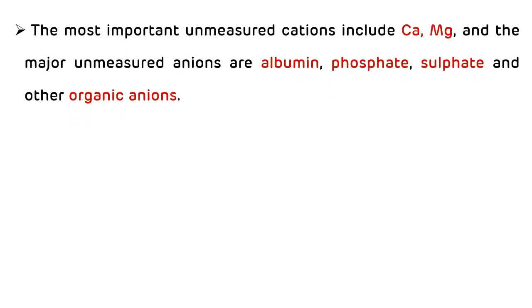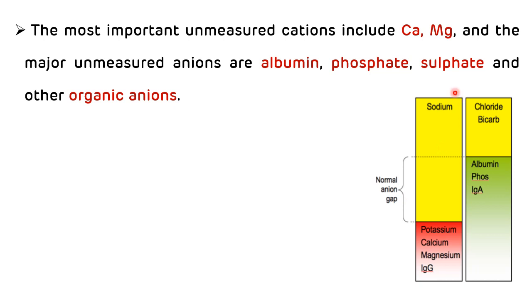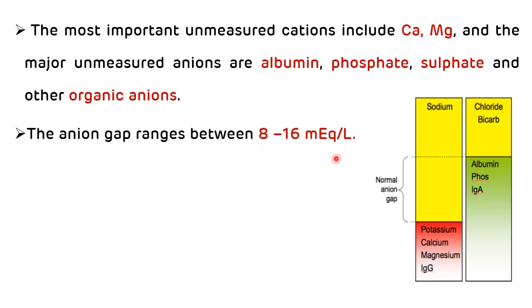The most important unmeasured cations include calcium and magnesium, and the major unmeasured anions are albumin, phosphate, sulfate, and other organic anions. This picture shows the normal anion gap. The unmeasured cations include sodium, potassium, calcium, magnesium, and immunoglobulin. The unmeasured anions include chloride, bicarbonate, albumin, phosphate, and immunoglobulin A. The normal range of anion gap is 8 to 16 mEq/L.